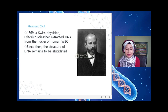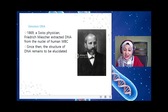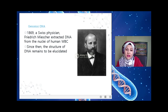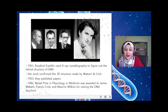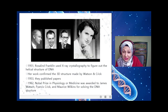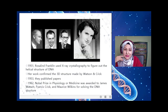In 1969, Swiss physician Friedrich Miescher extracted DNA from the nuclei of human white blood cells — he was the first to extract DNA from a human cell nucleus. Since then, researchers have tried to elucidate the structure of DNA. Among the pioneers are Watson and Crick, and also Maurice Wilkins.